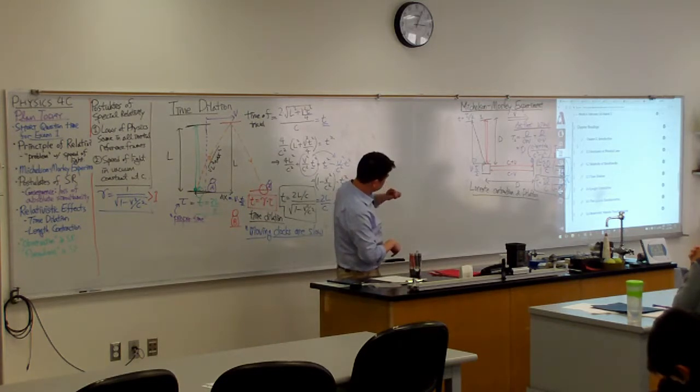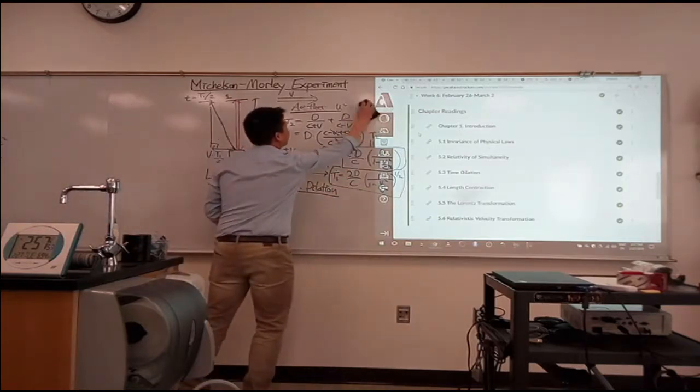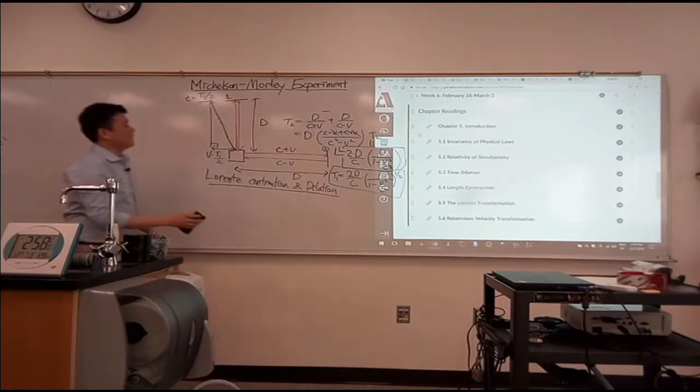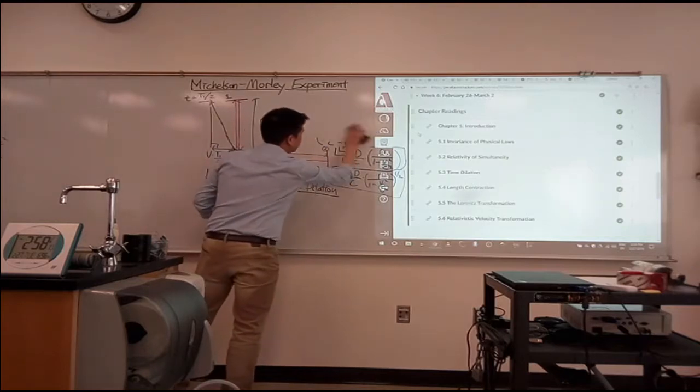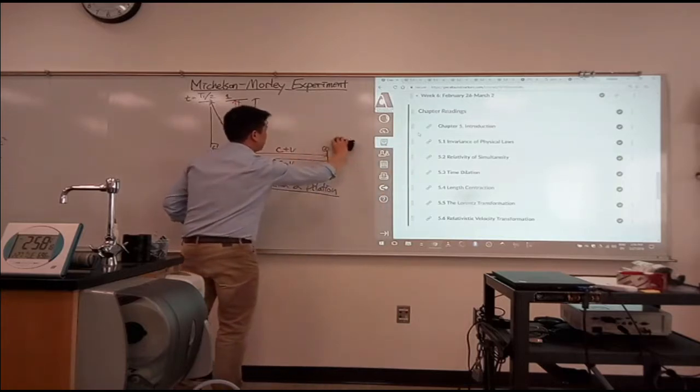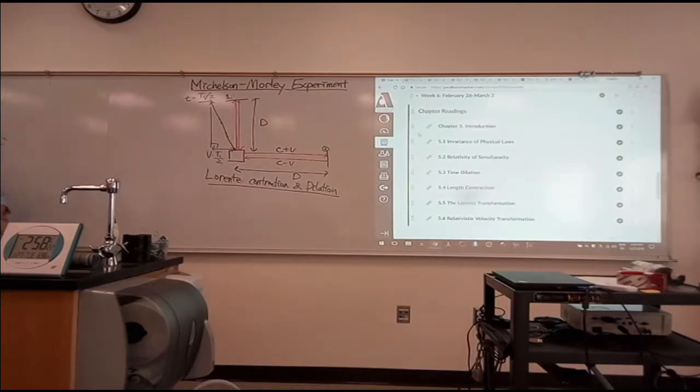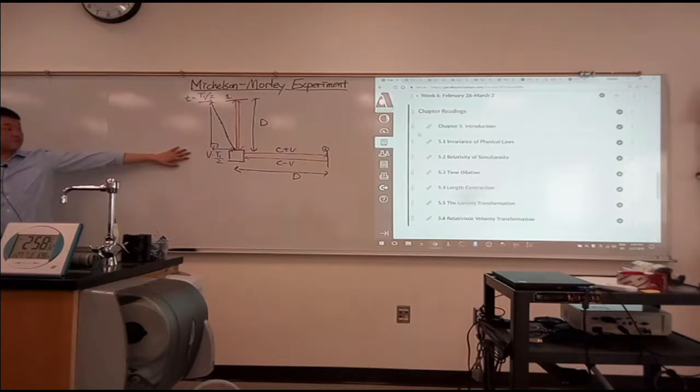I guess this is probably the good setup to use. Let me erase a bunch of stuff that was not correct. So once again, there's no such thing as an ether wind. And speed of light doesn't change as it's traveling. Let me just make up some space here and we'll use this setup for length contraction.